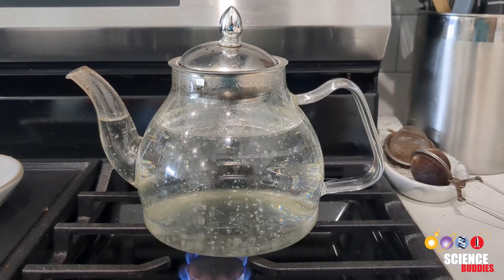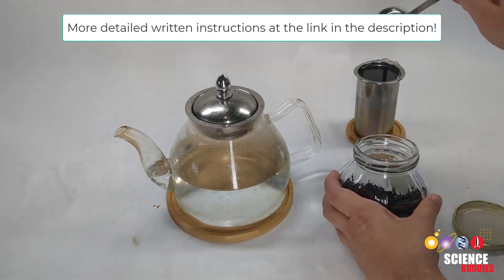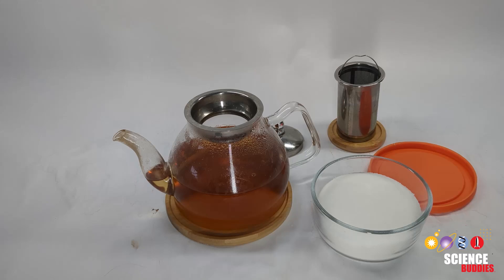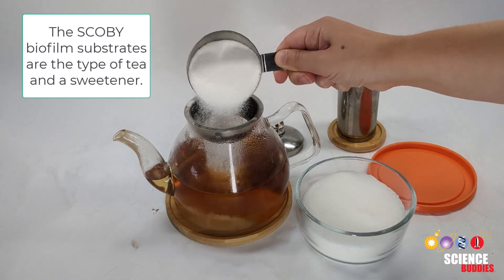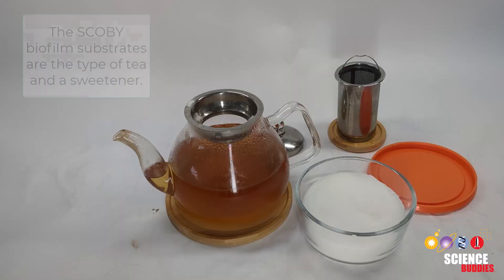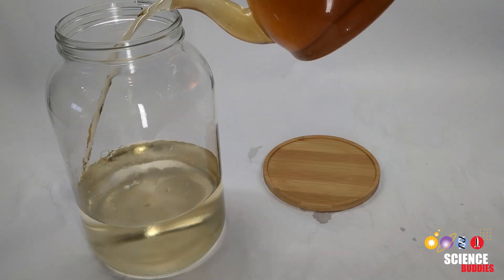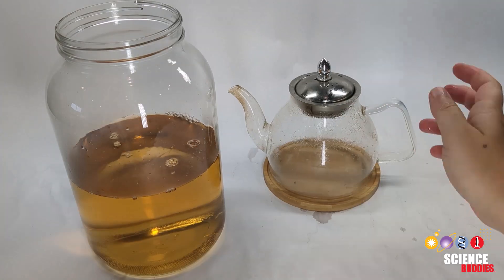First, you will need to boil filtered or bottled water to brew the tea in. Next, you will brew the tea for five minutes. Then, add the sweetener substrate to the warm tea and mix until the sweetener dissolves. Then, mix additional filtered or bottled water with the warm, sweetened tea together in a large jar.